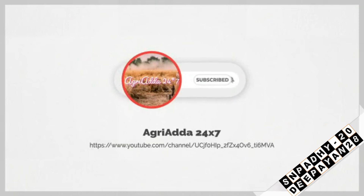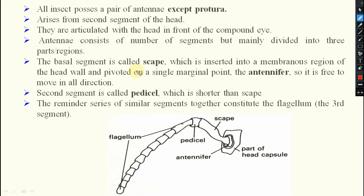In case of insects, if you go through IMS classification, there are 29 orders. Out of that, 28 orders are bearing one pair of antennae — that means two antennae are there. But one exception is the order Protura, where they do not possess any kind of antenna. Except order Protura, all others have antennae.